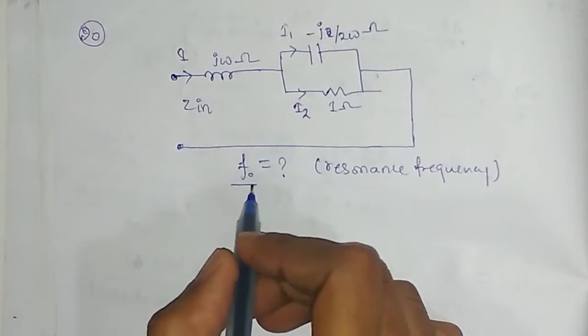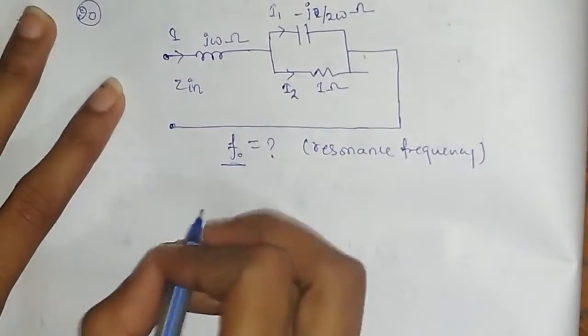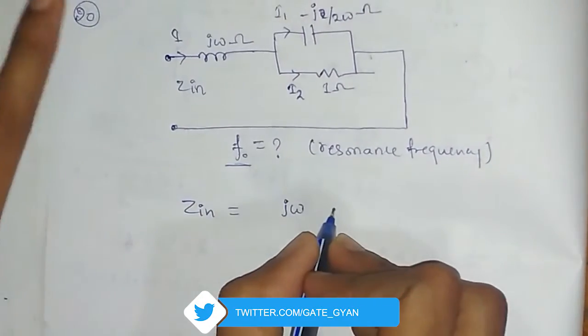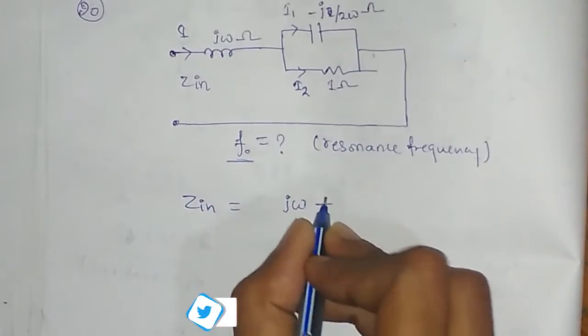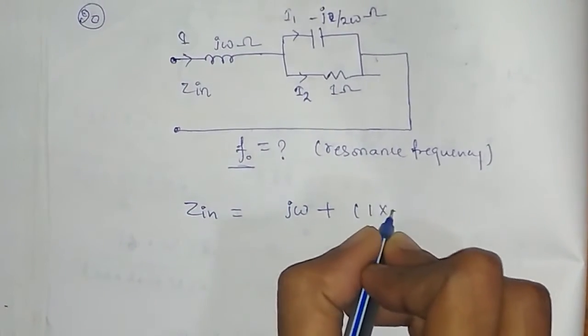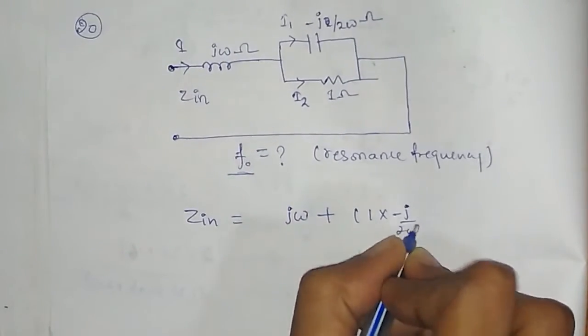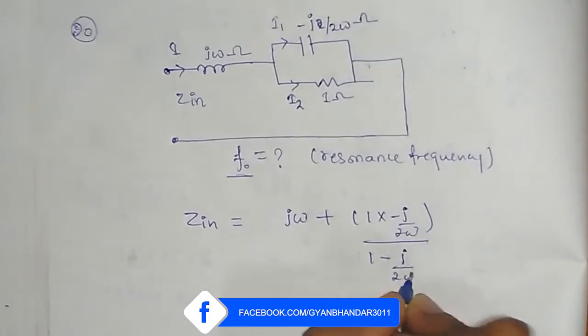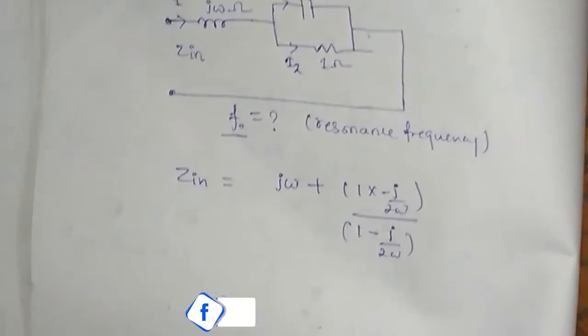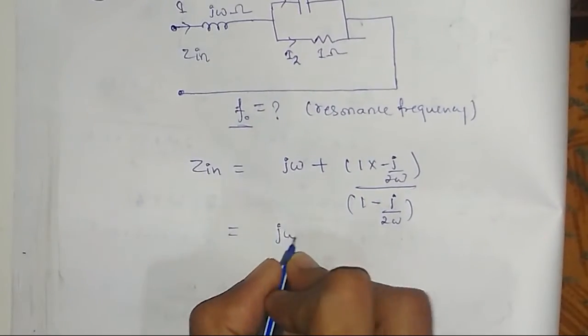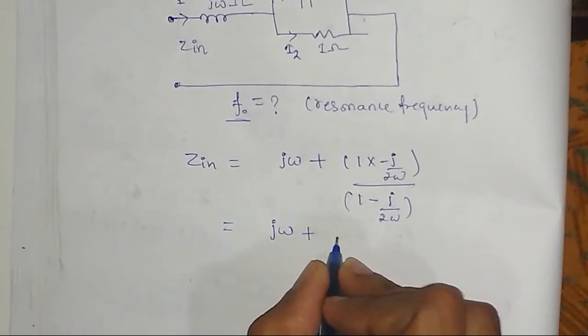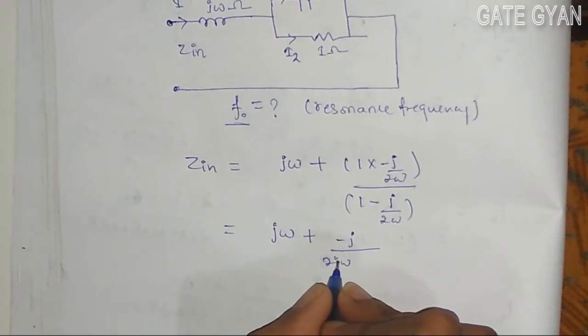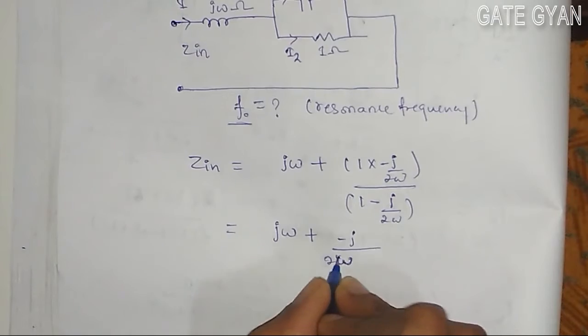So my Z in equivalent will be given by j omega plus 1 into minus j by 2 omega upon 1 minus j by 2 omega. I will simplify, then it will become j omega plus minus j upon 2 omega, so it's going to be 2 omega minus j.